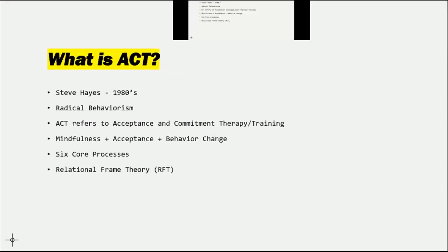ACT was initially developed by Steve Hayes in the 1980s — him and a few other practitioners. The idea behind ACT is that it is approached from a more radical behaviorism perspective, meaning that when we look at behavior we're taking into consideration the entirety of the individual — the things happening in the external environment as well as the internal environment and how that influences the individual on their day-to-day.